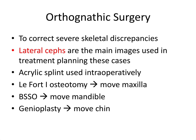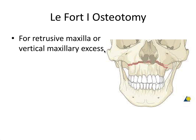A LeFort 1 osteotomy can be used to move the maxilla, a BSSO can be used to move the mandible, and a genioplasty can be used to alter chin anatomy. In a LeFort 1 osteotomy, the surgeon purposely separates the maxilla — essentially creating a LeFort 1 fracture — to free up and move the upper jaw forward or upward. This can be used for a retrusive maxilla or vertical maxillary excess.